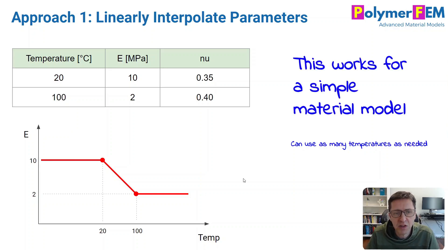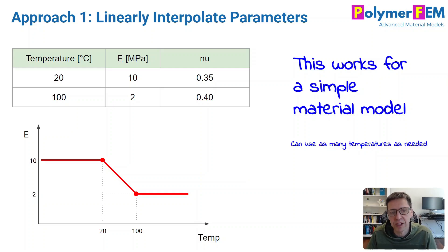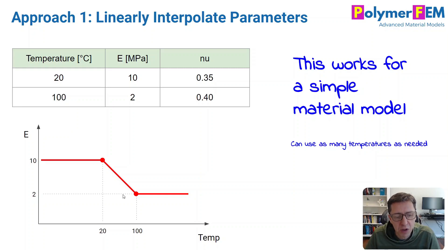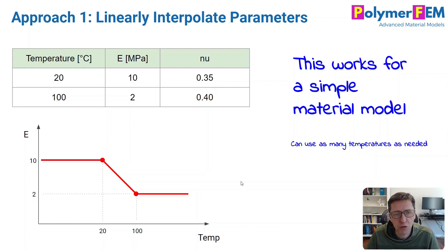This very simple linear interpolation approach works well if the material model is very simple. You can use as many linear segments as you want — it doesn't have to be just two. You can have a large number of these as well. So that's in essence what you do for simple material models.